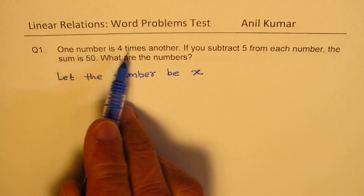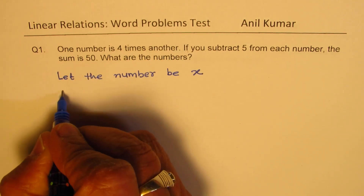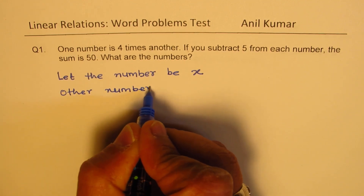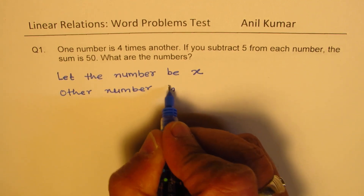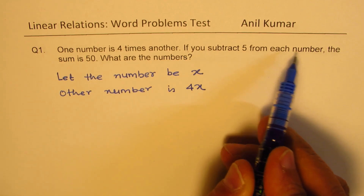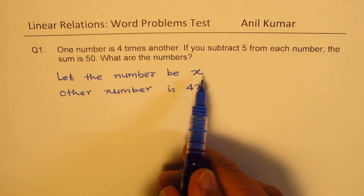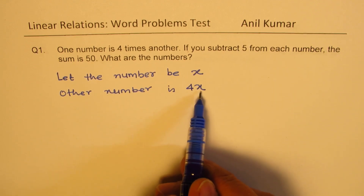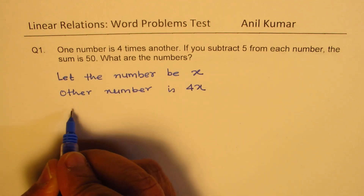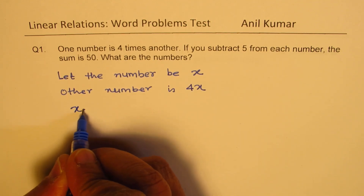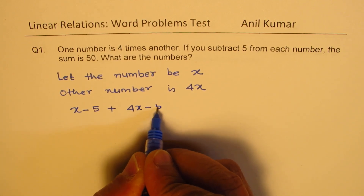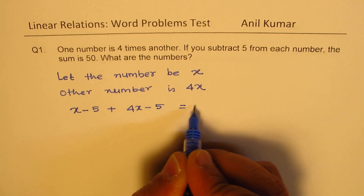So what number is four times another? The other number will be four times x. If you subtract five from each number, that means x minus five and 4x minus five, and their sum is 50. So that gives you an equation: x minus five plus 4x minus five equals 50.